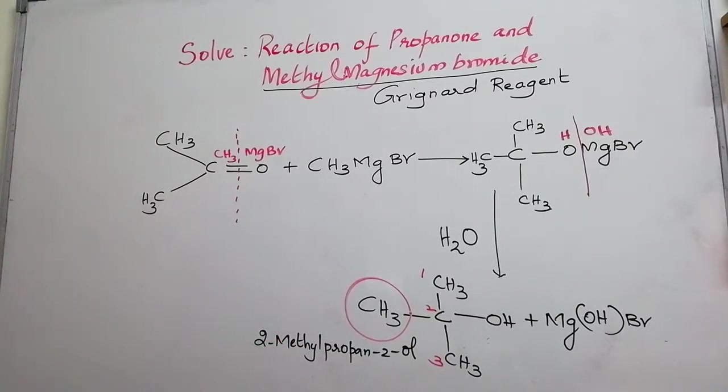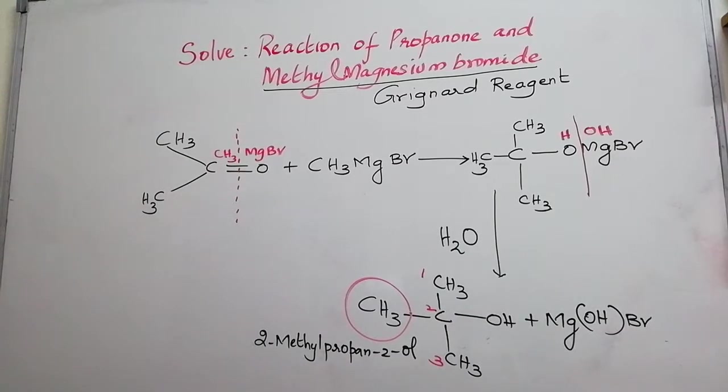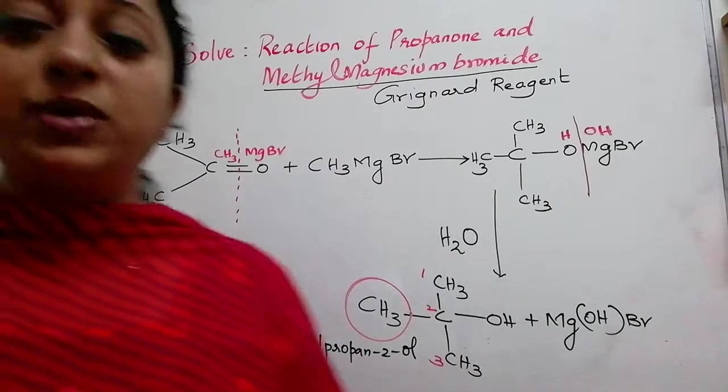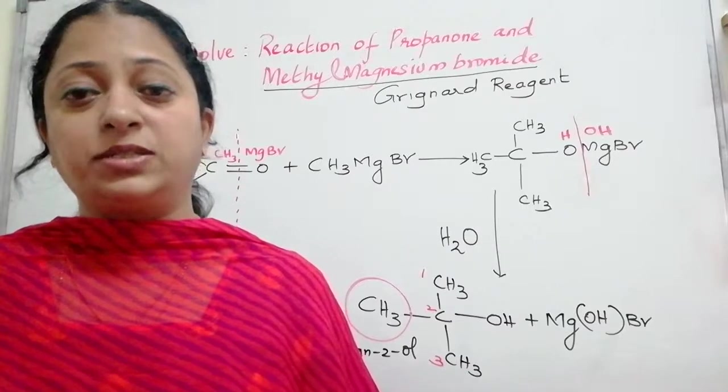So, this is what you have to keep in mind. The reactant and the product in the Grignard reagent, there is an increase in the carbon. So, whenever during conversion, if you find anything increase in the carbon, definitely you have to think of Grignard reagent's mechanism.